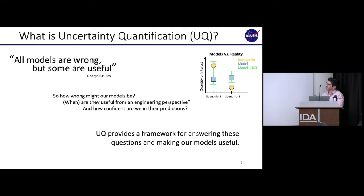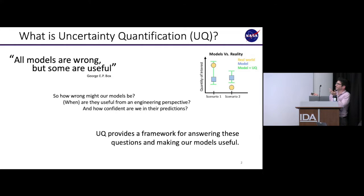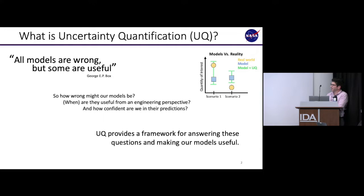Speaking abstractly, if I'm making a best guess or deterministic prediction, I would simply get a single prediction out of the model. A proper application of UQ might allow me to predict a range of possible outcomes using my computational model. In scenario one, my range of outcomes encompasses the real world result — I'd say my model is useful. In scenario two, the real world phenomenon is basically impossible according to my model — that's not so useful. So UQ allows us to make probabilistic predictions with our model, understand uncertainty associated with those predictions, and make our models more useful.